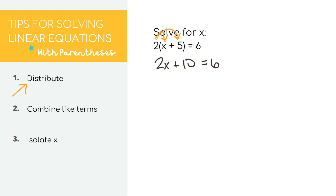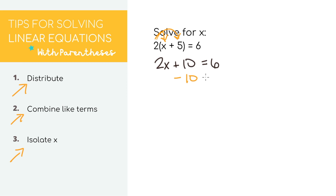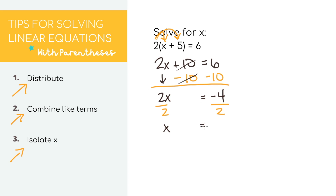On the right side, we'll just bring down the 6. For step number 2, we don't really have like terms on the same side to combine, so let's move on to step number 3, which is to isolate and solve for x. We want all of our x's on one side and all of our numbers on the other. To get rid of the plus 10, we do the opposite and minus 10 — everything you do to one side you do to the other. We get 2x equals negative 4, then divide by 2 on both sides, giving us x equals negative 2.